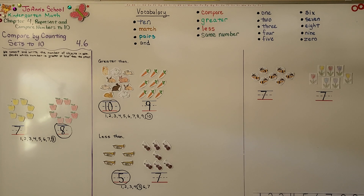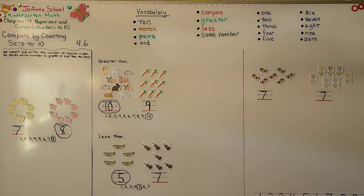So we can compare numbers by counting sets and remembering that the number that is less is going to come first in counting order, and the number that is greater is going to come after in counting order. Our next lesson, 4.7, we are going to continue comparing numbers. I hope you'll join me and I hope you have a really wonderful day.